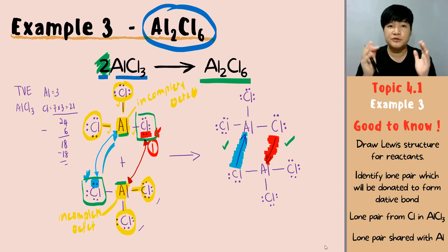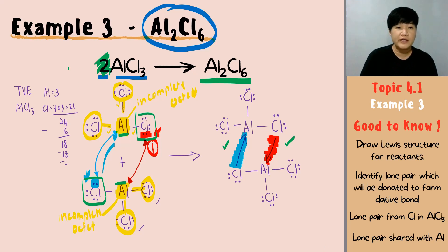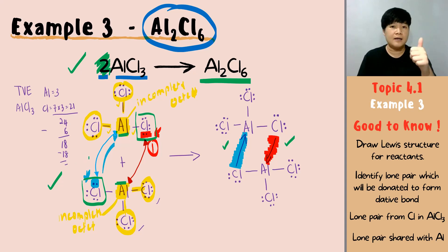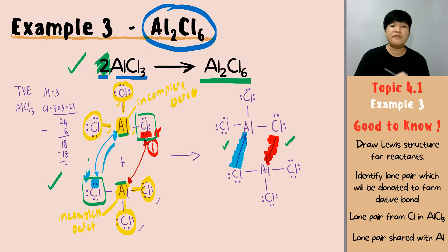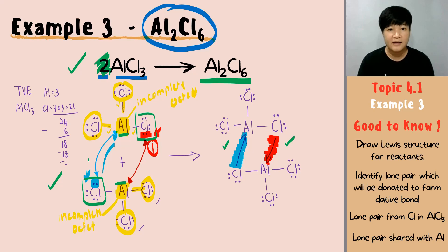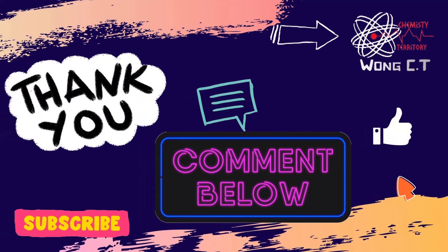That's it for dative covalent bonds. Make sure you know what dative covalent bonds are. To show the formation of dative covalent bonds, draw the Lewis structure of your reactants first, identify the lone pair, and identify who will be accepting the lone pair — then you will know where the dative covalent bond is from. If you have any questions, drop them in the comments below and I'll get back to you. Remember to like the video and subscribe to my channel for more videos. Thank you for watching — I'll see you again in the next video.